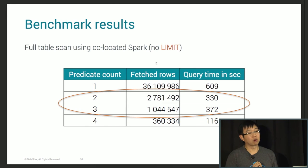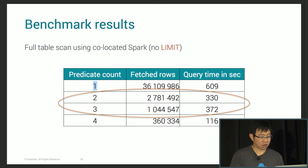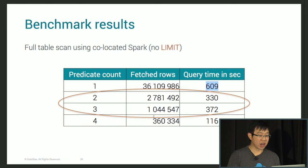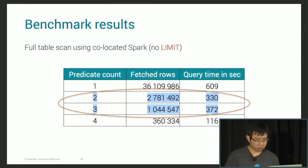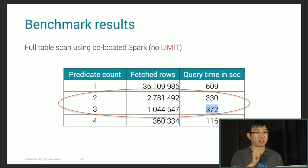I did a full table scan using co-located Spark with no limit. With one predicate, it fetches 36 million rows and took approximately 600 seconds. The more predicates you add, the fewer rows you get back and the less time it takes. But notice that with more predicates, even though fewer rows are returned, the query time can be slightly higher — because you always have the cost of reading the index files themselves, and that cost adds up.